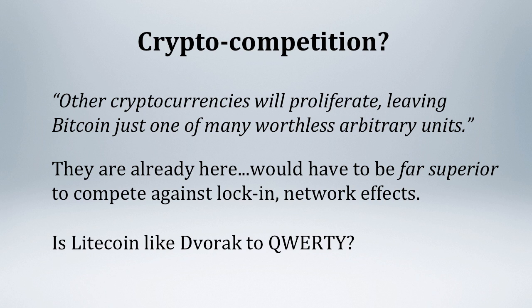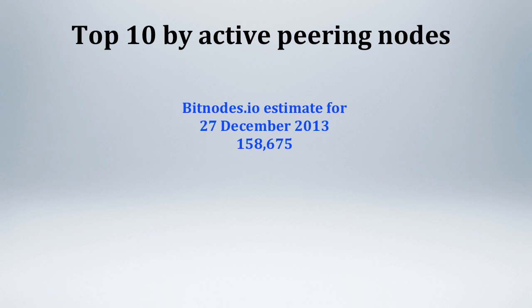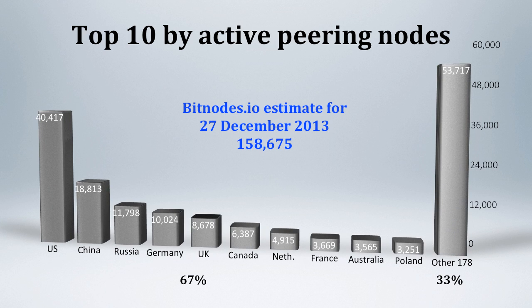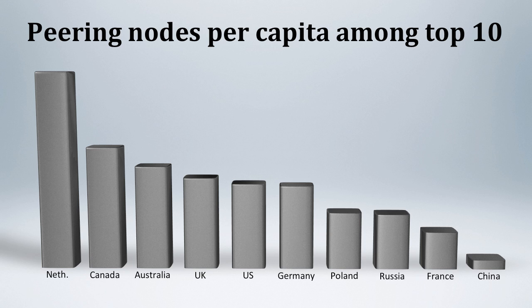It's common to say that Bitcoin is decentralized or doesn't have a center, but then where is it? No one knows how many active peering nodes there are, but one daily estimate has been coming up with between 100,000 and 200,000 on any given day. In this example, the estimate detected nearly 160,000 Bitcoin nodes in 188 different countries. 67% of active nodes that day were in the top 10 countries, with 33% in the other 178. The US led, followed by China, the Russian Federation, and Germany. The top 10 ranks look different in per capita terms — here the Netherlands was first, followed by Canada, Australia, the UK, the US, and Germany. Some nodes also join the process of adding new blocks to the chain, which is called mining. Mining secures the final verification of transactions and assigns first possession of new bitcoins to participating nodes as a reward.